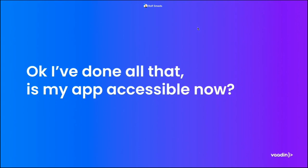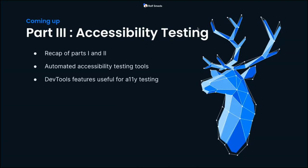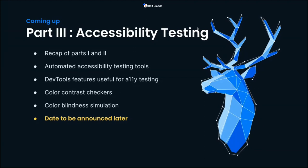So let's say you've done all this — can you be certain your app is accessible? Unfortunately, no — you still need to do testing. That's what we'll cover in part three of this webinar series. I'll recap parts one and two, show automated accessibility testing tools, browser developer tool features, color contrast checkers, and color blindness simulation utilities. Part three will probably be towards the end of summer due to vacation season — stay tuned.